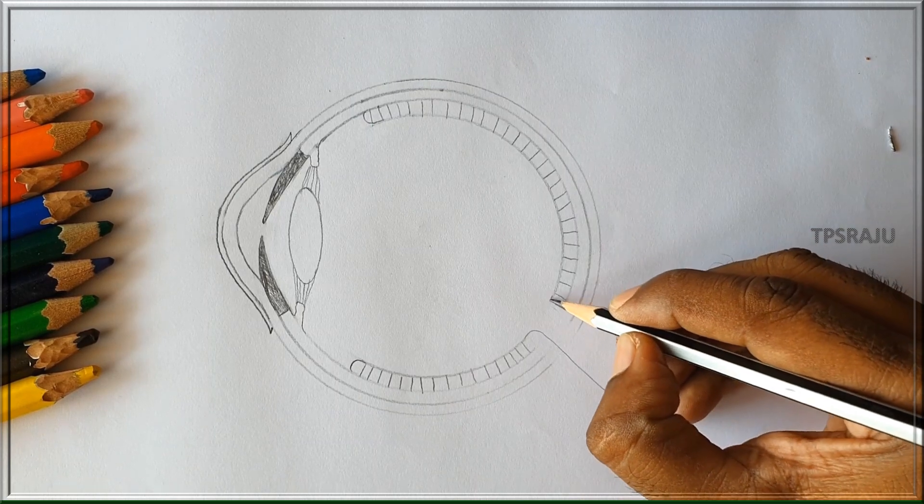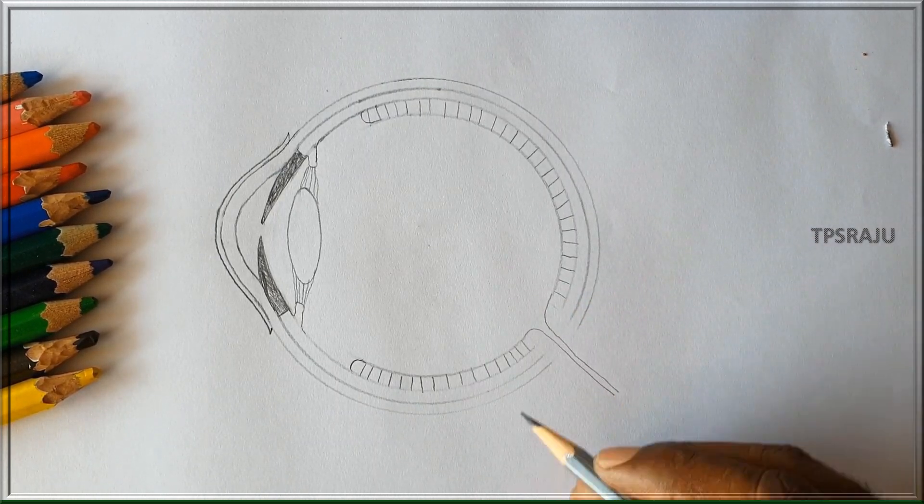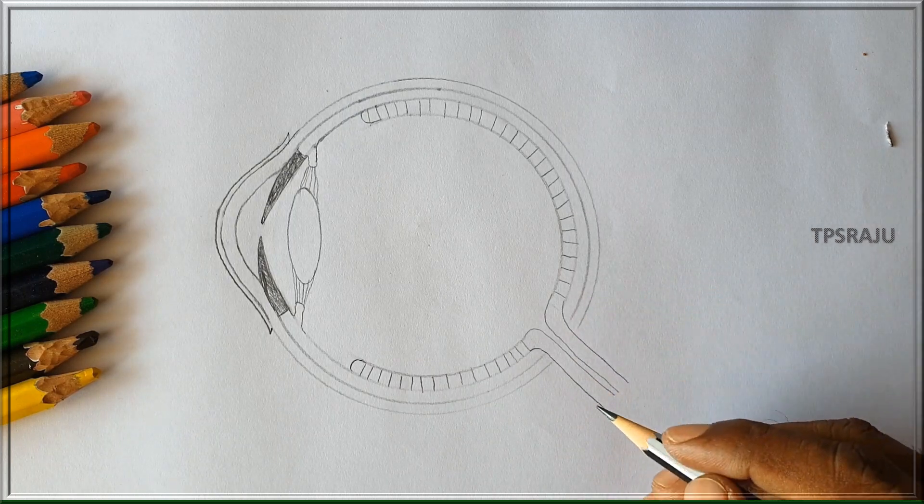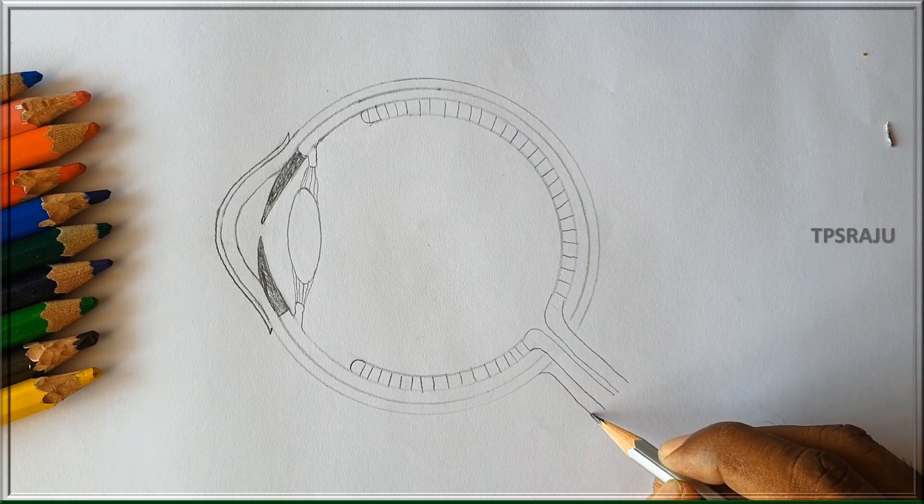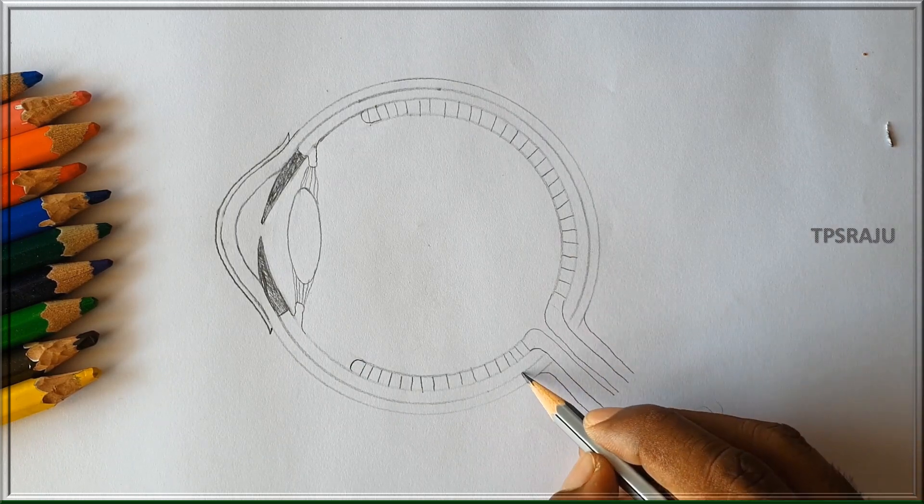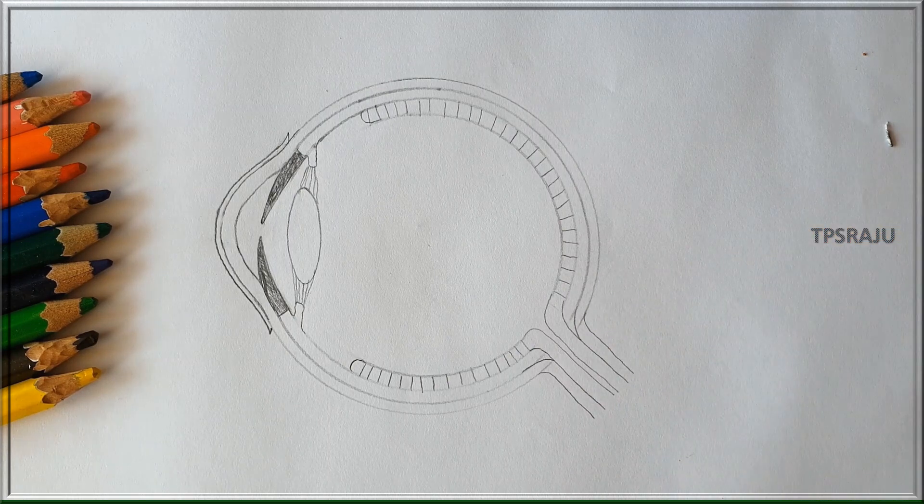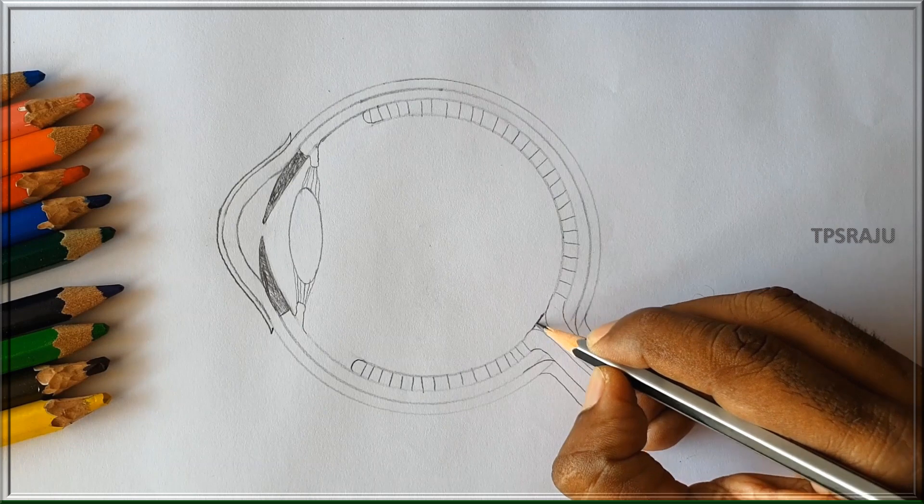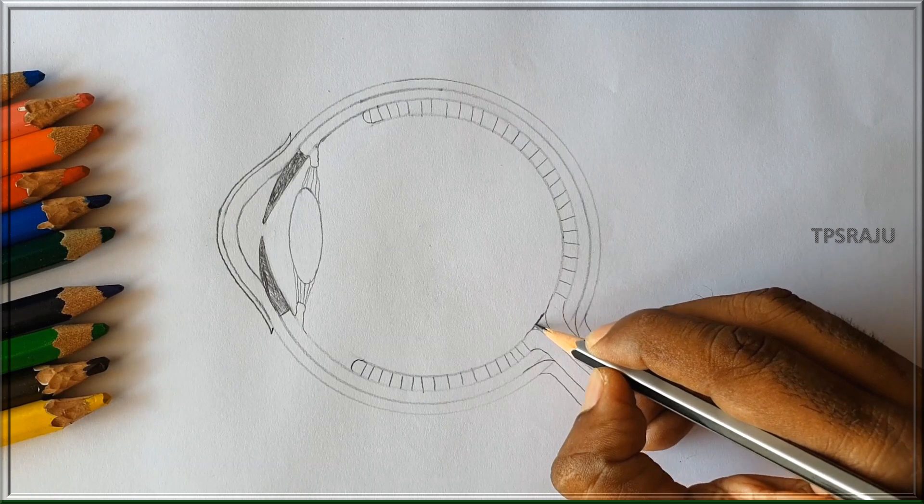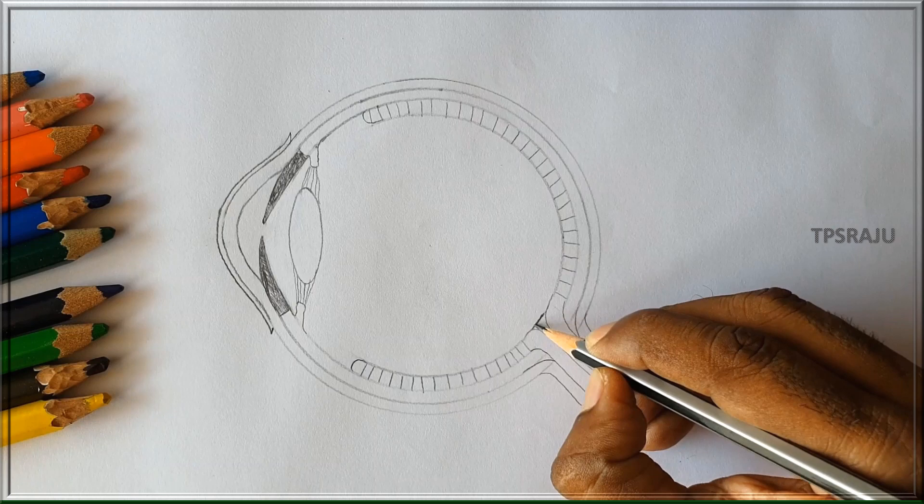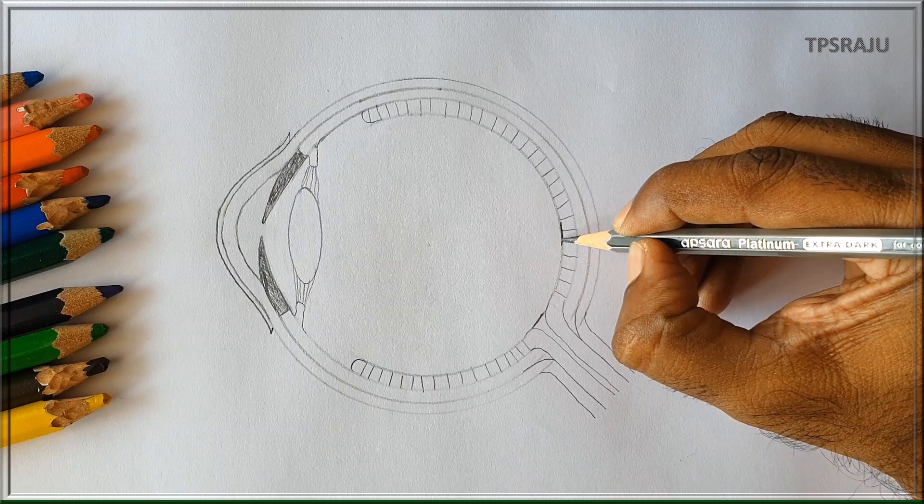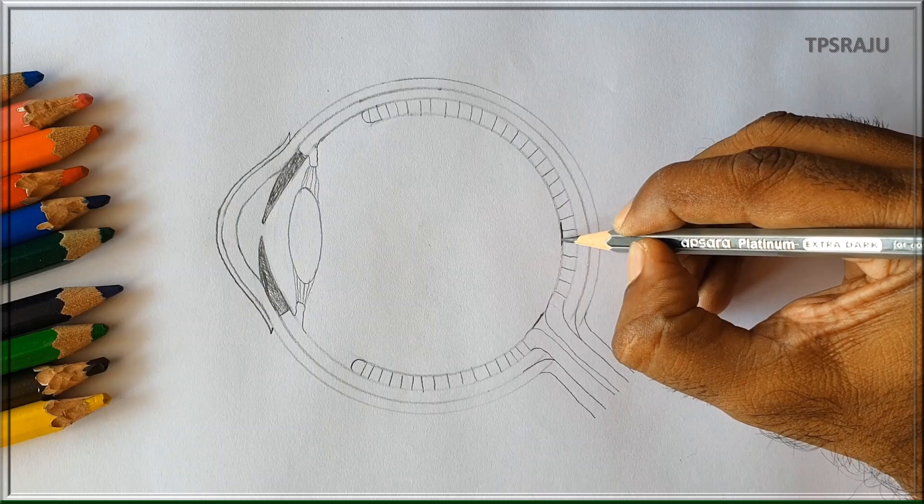One nerve arises from the back portion of the eye and reaches the brain. This is called optic nerve. There are no rods and cones at the point where retina is connected to optic nerve. It is called blind spot. In the center of the retina, large number of cones are present in a small region called yellow spot or fovea.